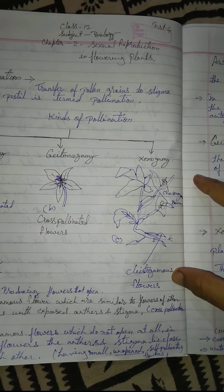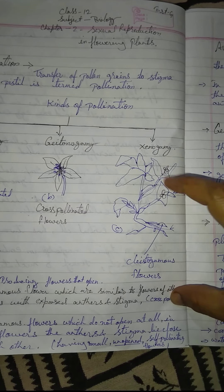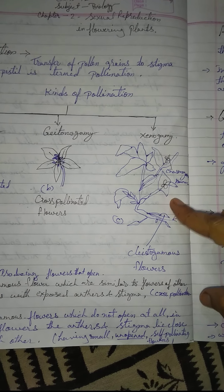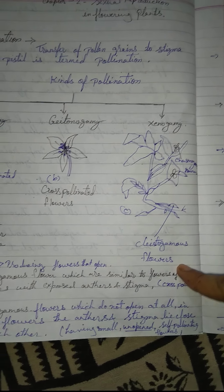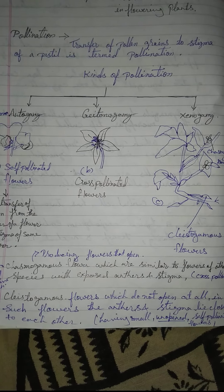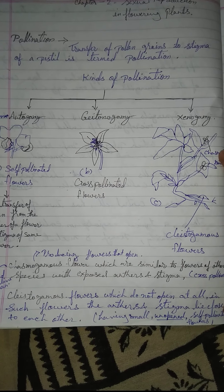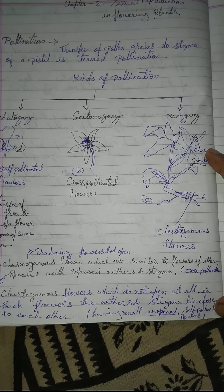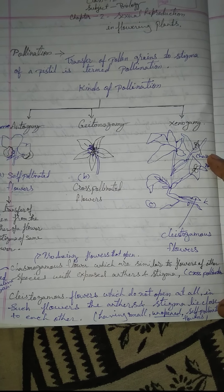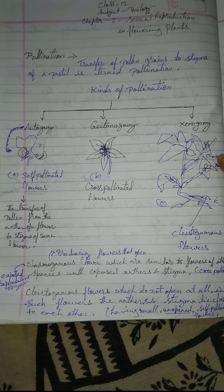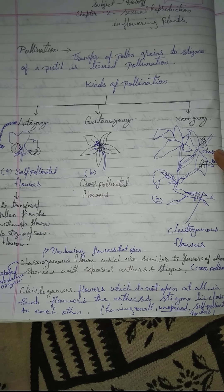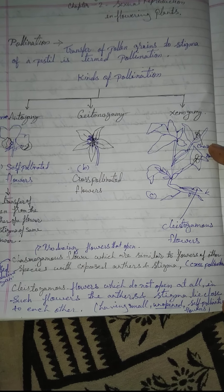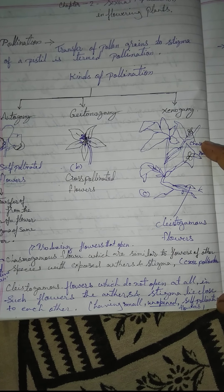Two types of flowers are shown in figure C: chasmogamous flowers and cleistogamous flowers. Chasmogamous flowers are similar to flowers of other species, exposing the anther and stigma. These flowers open and expose their reproductive organs, facilitating cross-pollination.